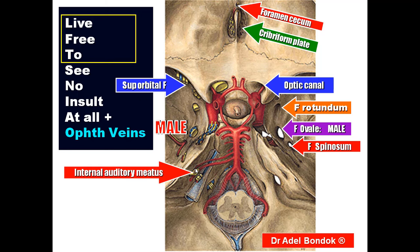This is the internal auditory meatus. It transmits two nerves and one artery: the facial nerve and the vestibulocochlear nerve, and the labyrinthine artery from the basilar artery.